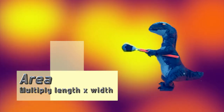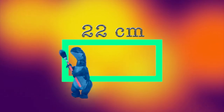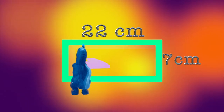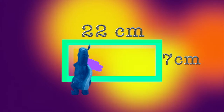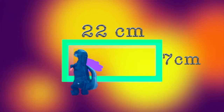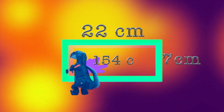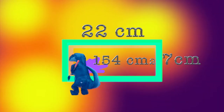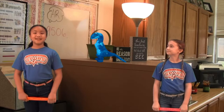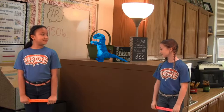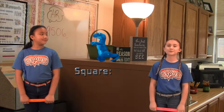So Shape-a-saurus, what about area? Area is how much surface a shape covers — like if we were painting the whole thing or covering it with carpet fabric. To figure out the area, you multiply the length times the width. For this same rectangle, we multiply its length of 22 centimeters times its width of 7 centimeters. That gives us a total of 154 square centimeters. We say 'square' because we are measuring in two directions.